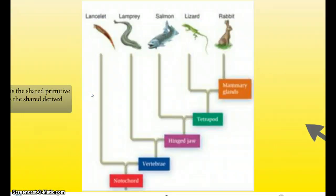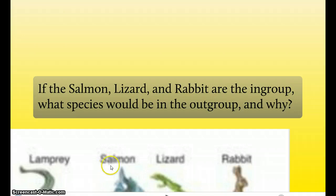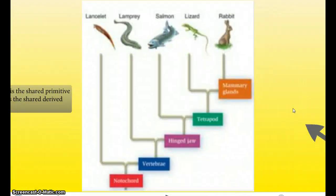This is another cladogram. If the salmon, lizard, and rabbit are the ingroup, what species would be the outgroup, and why? Well, we have the salmon, lizard, and rabbit. That's the ingroup. So, a species that would be in the outgroup would be the lamprey, because it lacks the shared derived character of the hinged jaw. Remember how I said that the ingroup all have the same shared derived character? So, they would all have the hinged jaw. But, because the lamprey does not have the hinged jaw, it's part of the outgroup.